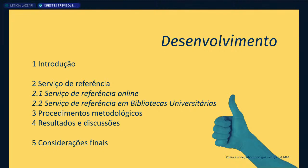A Daniela pergunta: a contextualização da instituição onde será realizada a pesquisa deve vir antes ou depois dos objetivos e justificativa? Você pode mencionar a universidade na própria introdução, ou incluir nos procedimentos metodológicos — no universo de pesquisa, descrevendo qual instituição você pesquisou. Se for muito focado naquela instituição ou se achar relevante, pode incluir um capítulo sobre ela no referencial teórico. Mas nos procedimentos metodológicos já estaria de bom tamanho.